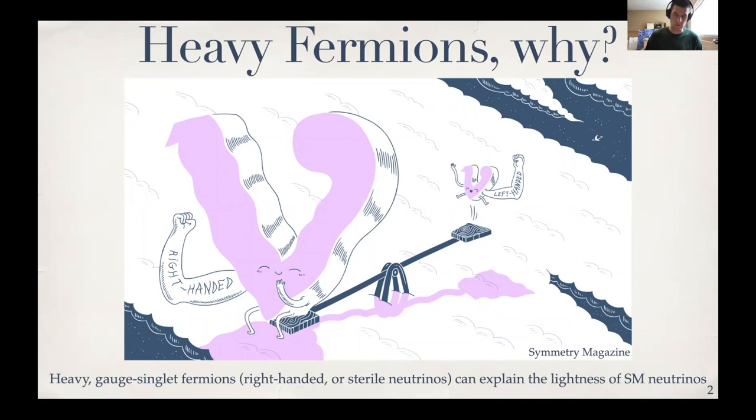Now, to date, these heavy fermions have not been discovered, but if they are discovered, they can have interesting ramifications, not only for the lightness of neutrino masses, but with other physics such as leptogenesis, dark matter, etc.